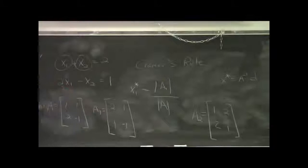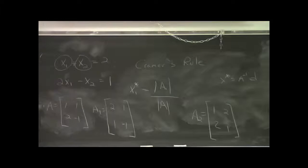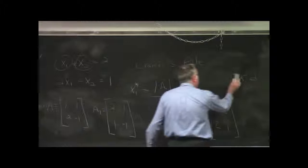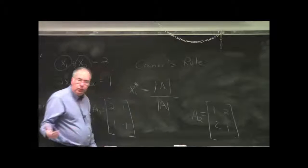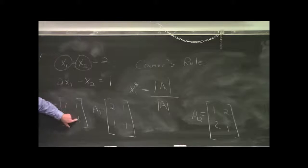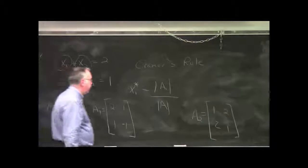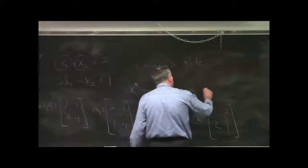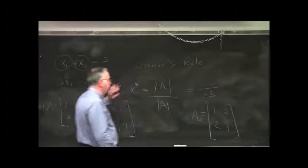Cramer's rule says x1 star is just the ratio of the determinant of A1 to the determinant of A. Now, we've already calculated the determinant of A. We found the determinant of A was equal to what, Lucy? What was the determinant of A in this case? Negative 3. It's just minus 1 minus 2. So the determinant of A, let me move this up a bit, is down here, and that's just minus 3. We're calculating x1 star here.